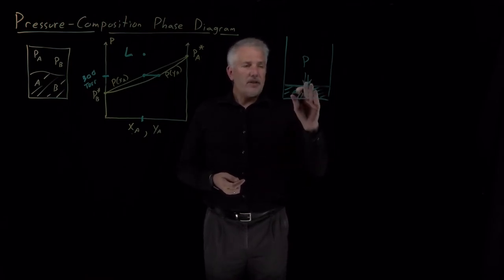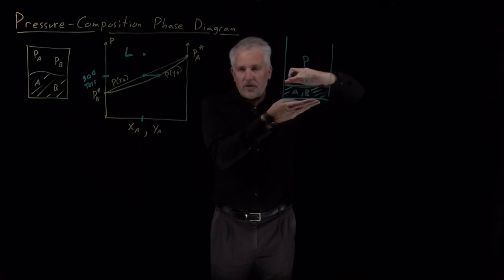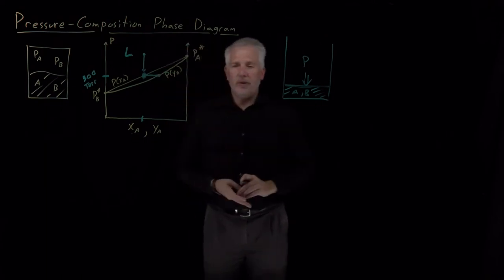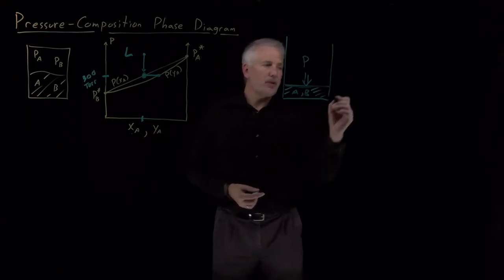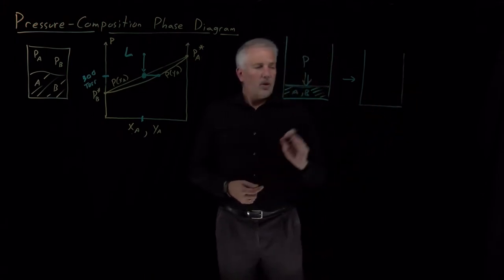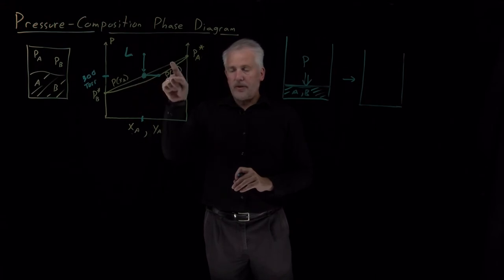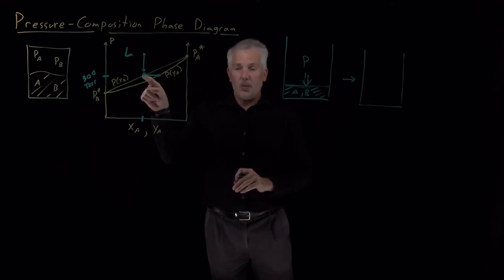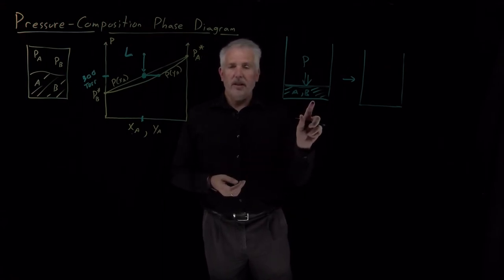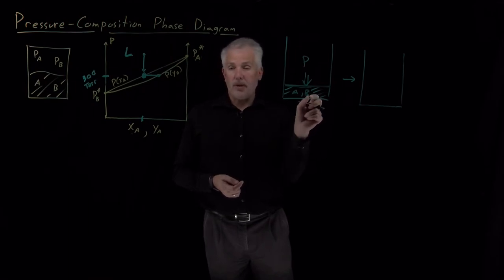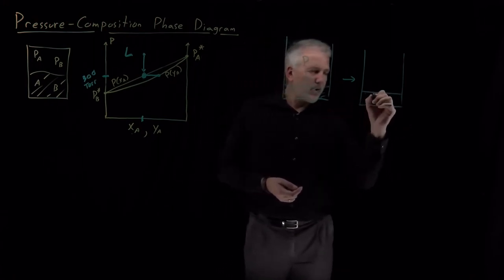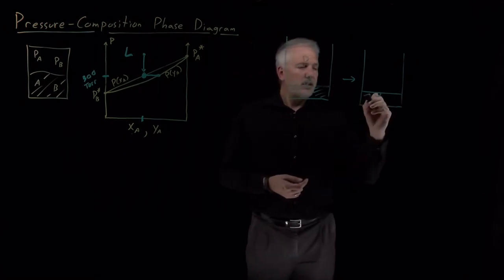I can imagine slowly reducing the pressure on this liquid. When I decrease down until I get exactly to the Raoult's law pressure — 300 torr in our example — once I reach this liquid-vapor coexistence line, I will have two phases in coexistence with each other. I'll have vapor coexisting with liquid. The way to get vapor in coexistence with the liquid is to form a bubble of vapor. I now have a system with a tiny little bubble of gas phase that's formed at the top.